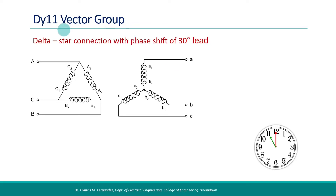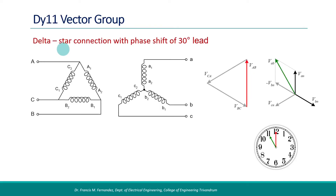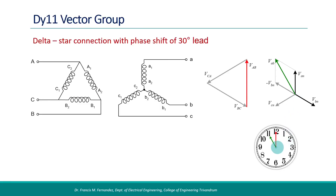The last one in this listing is the DY11 vector group. The primary is delta connected and the secondary is star connected. In the phasor diagram, the voltage induced in winding A of the secondary will be in phase with the primary line voltage. The line voltage VAB in the secondary is obtained by VA minus VB. Finally, the line voltage is leading by 30 degrees from the corresponding primary voltage — the 11 o'clock position matches here also. The simplified connection diagram and the displacement diagram are shown.